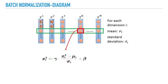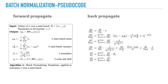Let me introduce the algorithm with a diagram. Suppose we have a mini-batch with size equal to m. We first shift and scale x_i by subtracting mu_i and dividing by delta_i. Then we rescale and reshift x_i by multiplying by gamma_i and adding beta_i. Here is the pseudocode of batch normalization. In the back-propagation phase, we just apply the chain rule to calculate the gradient.